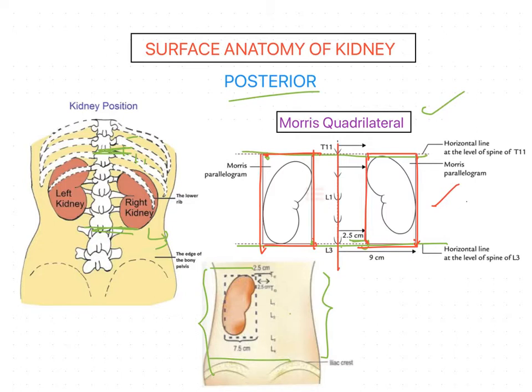Another important point is that the middle of the hilum of each kidney is located roughly at the lower border of the L1 vertebra. This completes the description of the Morris quadrilateral.